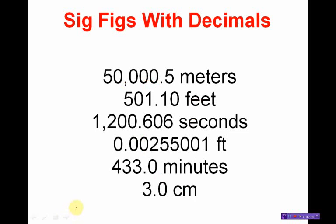This set of numbers all have decimal places. Here's a decimal place — that's going to be 50,000.5 meters. Whenever I deal with a number that has a decimal place, I count my sig figs by drawing an arrow coming in from the left. As before, I go through all zeros and stop when I hit a real number. I'm going to stop at 5. Once I stop, I count all the numbers that remain: 1, 2, 3, 4, 5, 6. There are six significant figures in that first measurement.